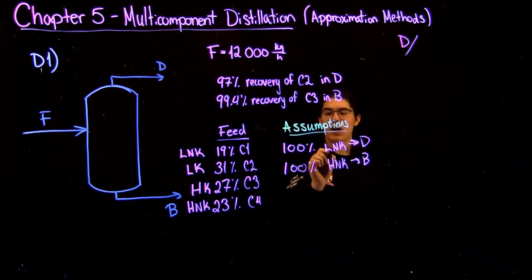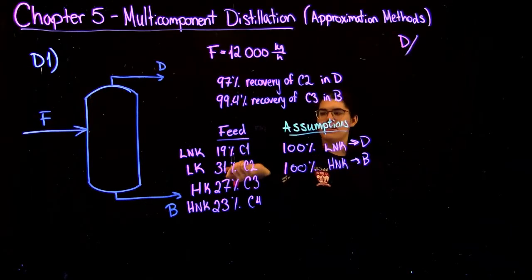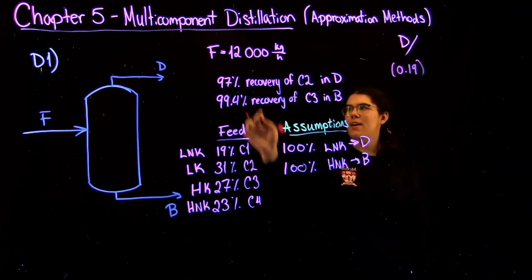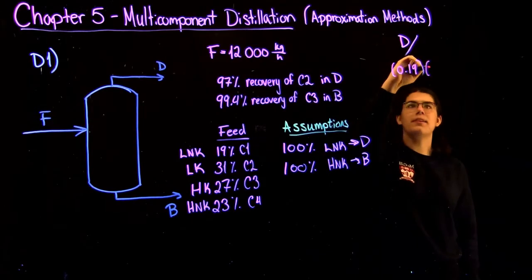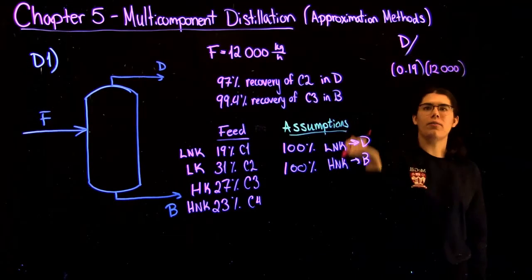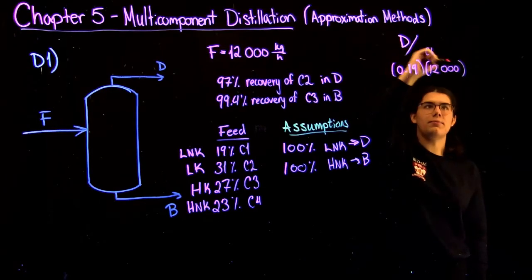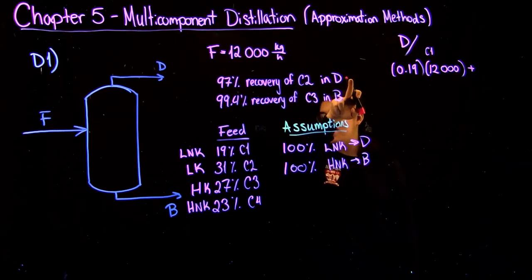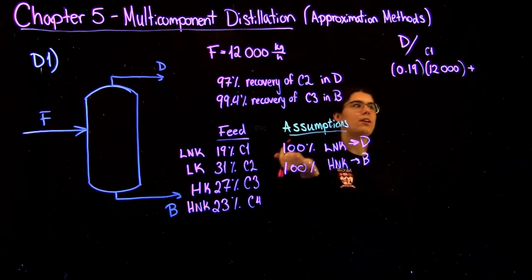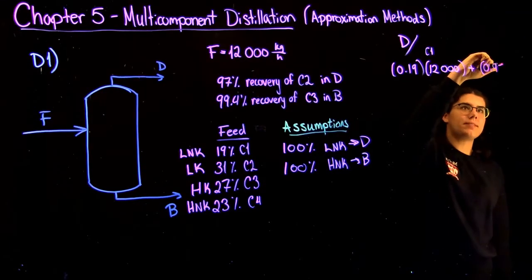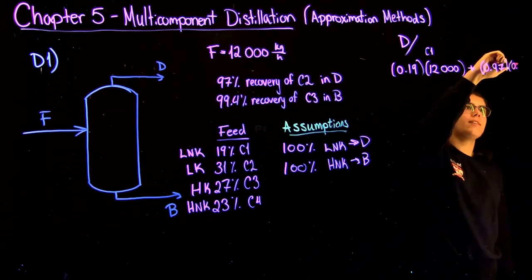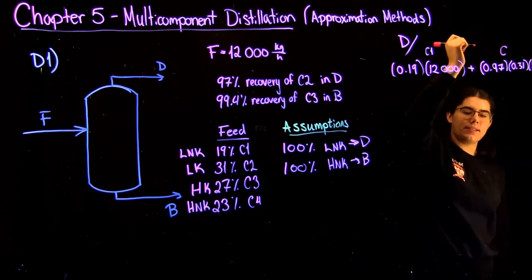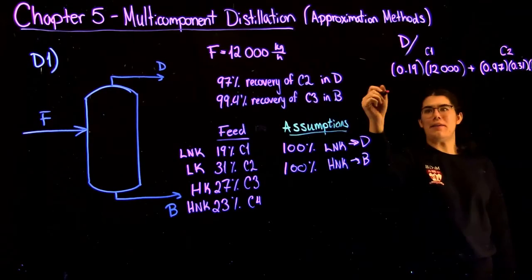We're going to do the distillate. We know that 100% of the light non-key C1 goes to the distillate. So that means because we know 19% of it is in the feed, we have this much of it going into the distillate. That's C1. So we're going to look at the next component, C2. We know we have 97% recovery of it in the distillate. So that means 97% of what's in the feed ends up there. So that one is for C2.